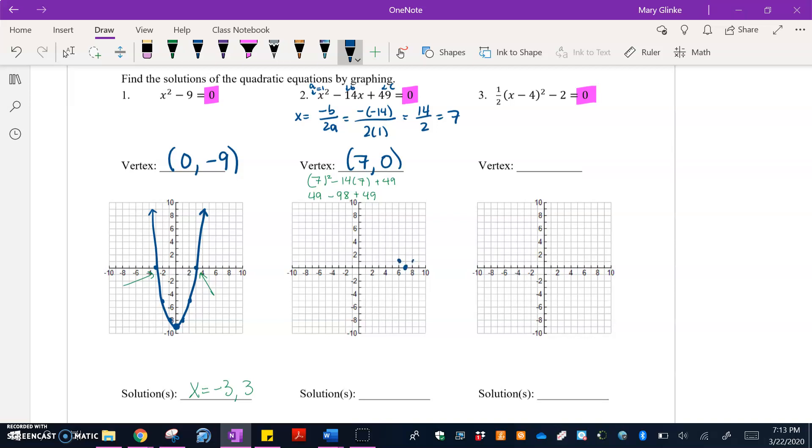So what I'm going to do is I'm going to graph the point (7, 0). My a value is one, which means I'm going to go over that one, three, and five pattern. And I'm going to go up because it's positive one. So here's my parabola, and my solutions then are going to be where it crosses the x-axis. And it crosses just at that one point at x = 7.